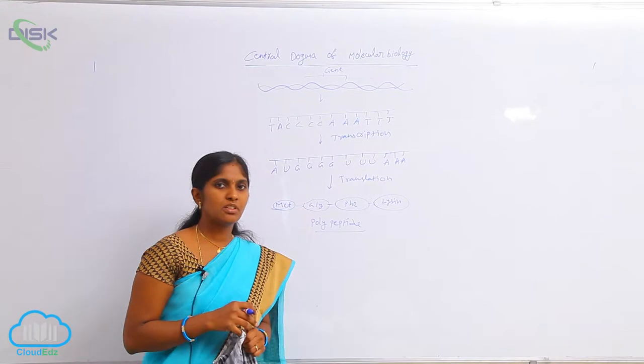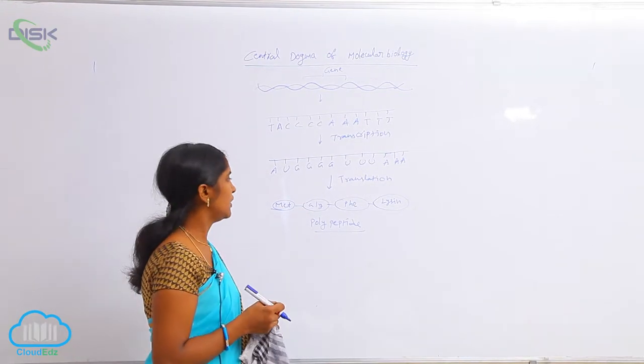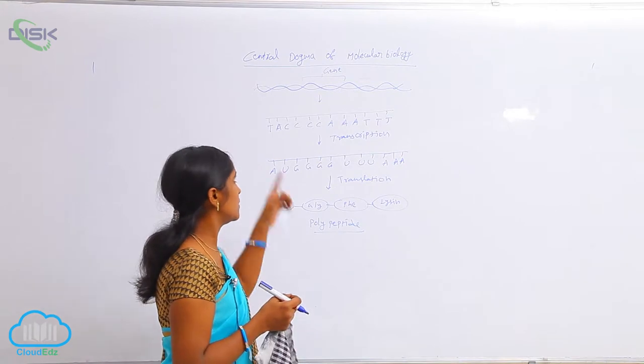Genetic information is processed from DNA to proteins. How does it proceed? You see here.